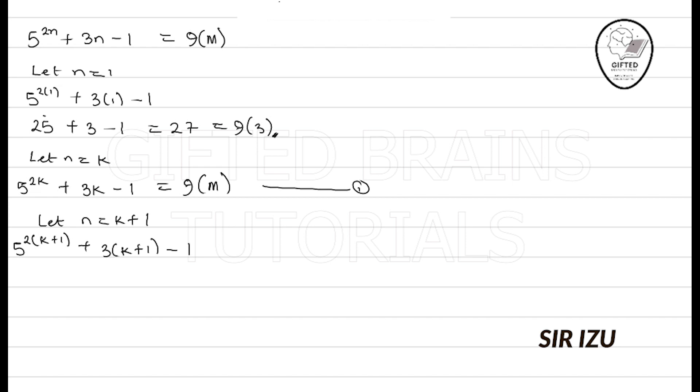Okay. So, let's see if this will give us a multiple of 9. All we just have here is 5 raised to power, if I expand the bracket in the power, we have 2k + 2. And then, plus 3k + 3 - 1.